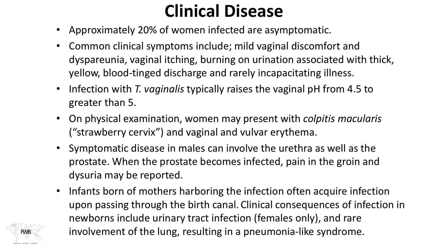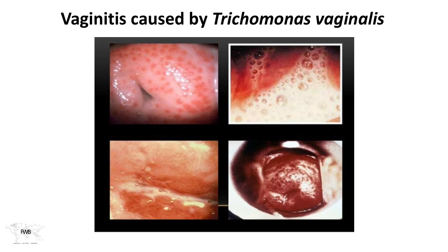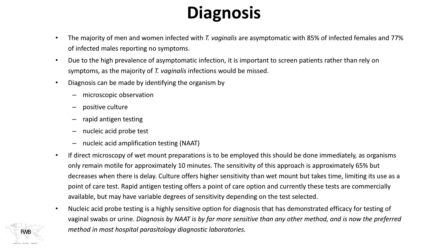Infants born of infected mothers can acquire infection passing through the birth canal. Clinical consequences in newborns include urinary tract infection and, rarely, a pneumonia-like syndrome involving the lungs. These graphic pictures show inflamed disease and the frothy hydrogen production. Regarding diagnosis, a major challenge is that a large number of infected people are asymptomatic — as many as 85% of infected females and 77% of infected males diagnosed on screening have no symptoms, making screening essential.